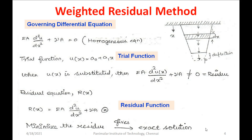We assume a trial function — either a polynomial or trigonometric trial function — to solve this differential equation in the weighted residual method. Here we use a polynomial trial function. The field variable u(x) is assumed as u(x) = a₀ + a₁x, which is a linear polynomial. Based on the nature of the problem, we select the order of the polynomial.